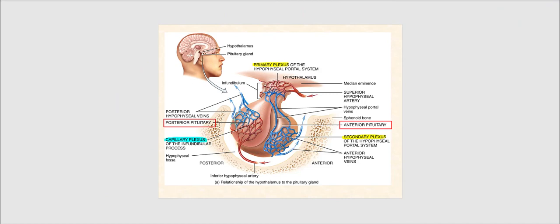Now look carefully at this image showing the relationship of the hypothalamus to both the anterior and posterior pituitary gland. The relationship between the hypothalamus and the anterior pituitary is referred to as the hypophysial portal system, while the relationship between the hypothalamus and the posterior pituitary is referred to as the hypophysial tract. Looking at the blood vessels in the infundibulum and both pituitary lobes, we can see a total of three capillary beds: the primary plexus of the hypophysioportal system, the secondary plexus of the hypophysioportal system, and the capillary plexus of the infundibular process.